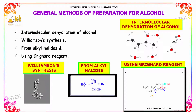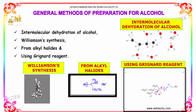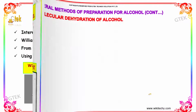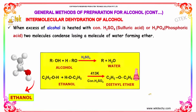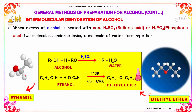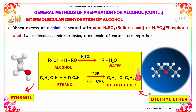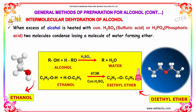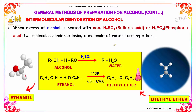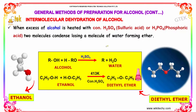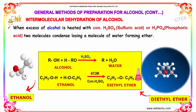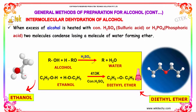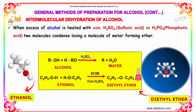The general methods covered are: Intermolecular Dehydration of Alcohol, Williamson Synthesis from Alkyl Halides, and using Grignard Reagents. In Intermolecular Dehydration, when excess of alcohol is heated with concentrated sulfuric acid or phosphoric acid, two molecules condense losing a molecule of water, forming an ether. That is, ROH plus HOR in the presence of sulfuric acid gives ROR plus water.